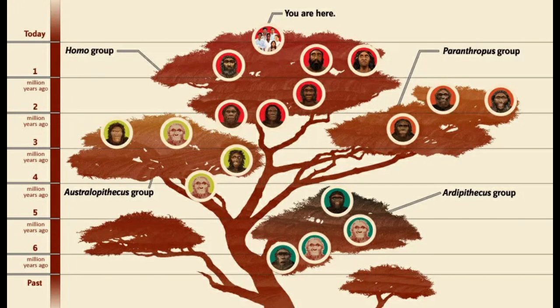If we go to the root of the human story, it's accepted that the first hominins — and hominins are humans, but it includes the early archaic humans such as Denisovans, Neanderthals, Homo erectus, and even earlier the Australopithecines — these all come under the hominin grouping.